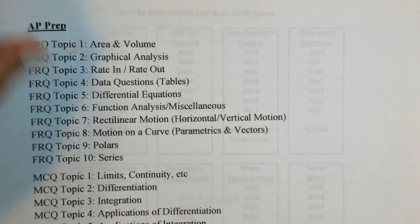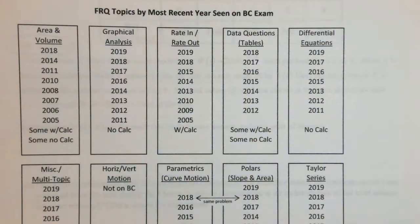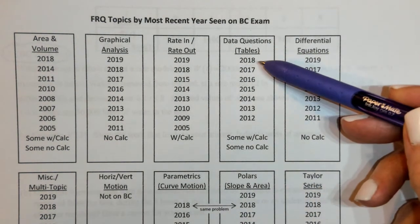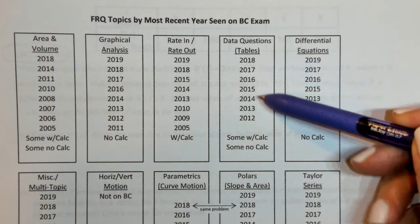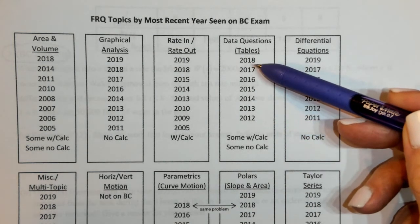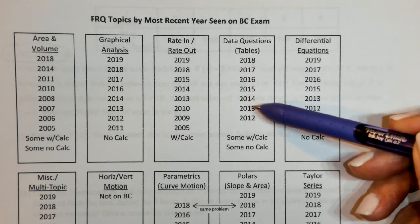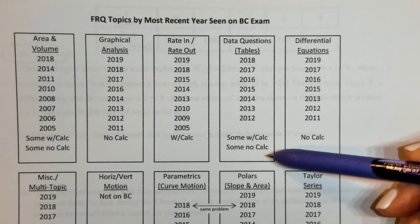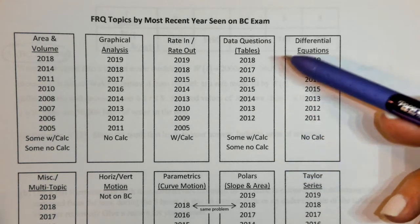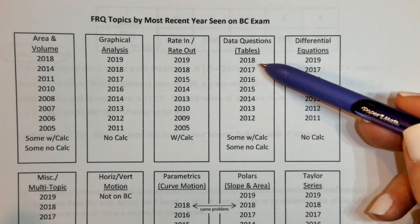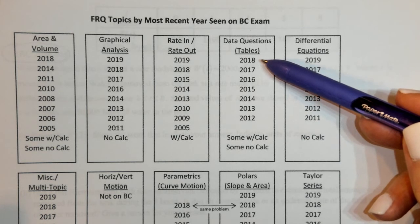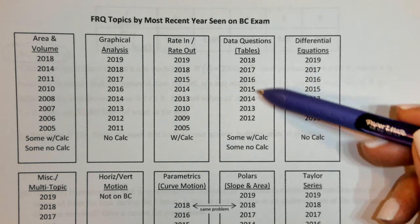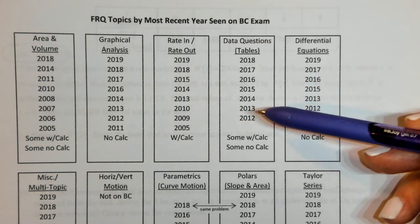Let's take a look at our most recent AP exams. As you can see, this is another very common type of question. Some of them have a calculator, some do not. There wasn't one in 2019, but you can see it is a very popular type of question.